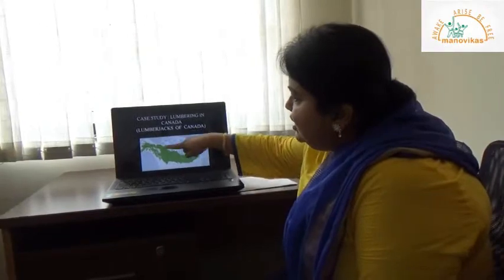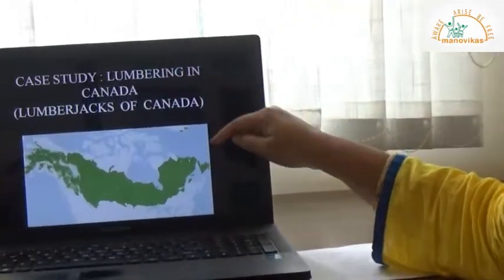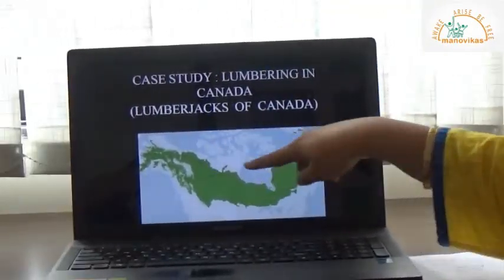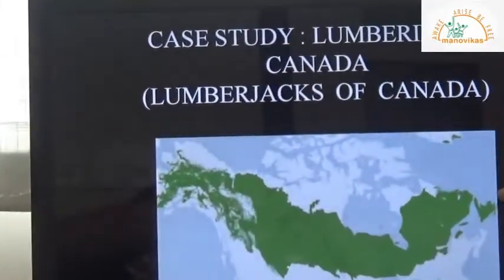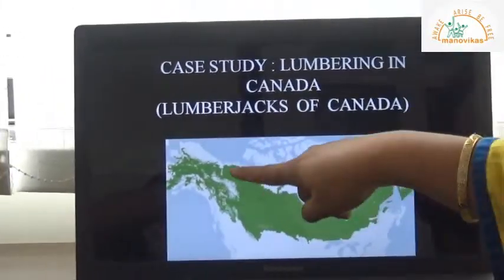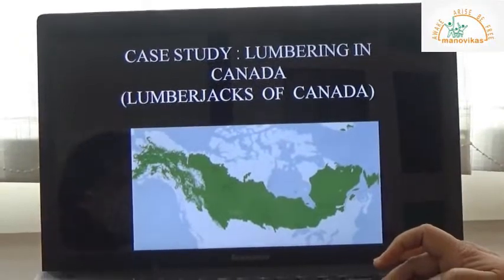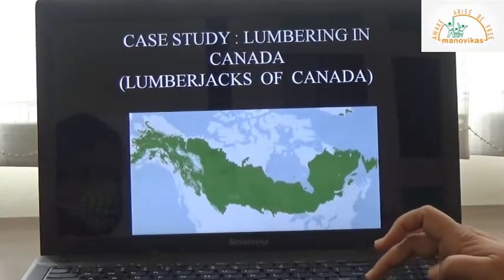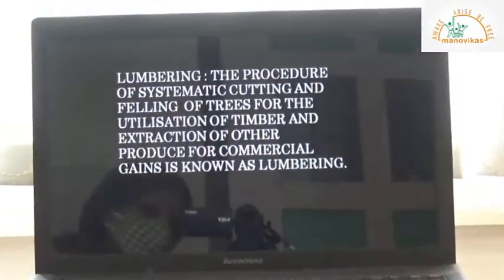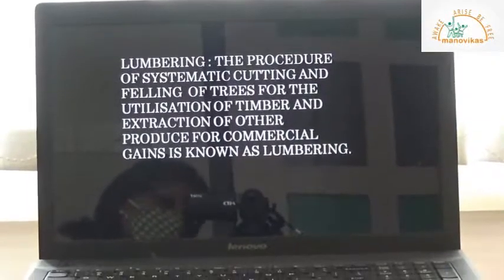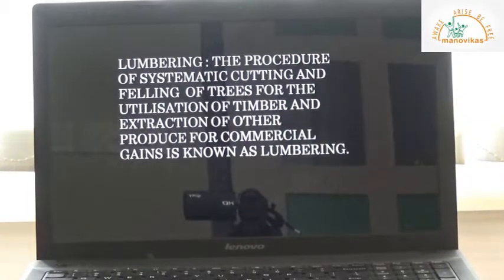On this map you can see the place where the lumbering activity is carried out. The green patch on this North American map surrounds Hudson Bay — that green patch represents the lumbering activity area. This is the taiga region of this particular continent.